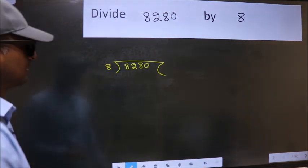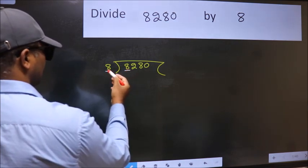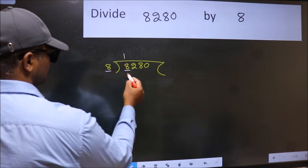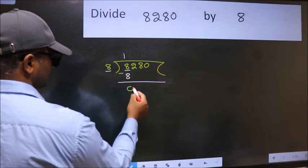Next, here we have 8 and here 8. When do we get 8 in the 8 table? 8 once is 8. Now we should subtract. We get 0.